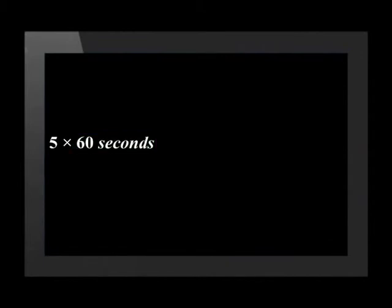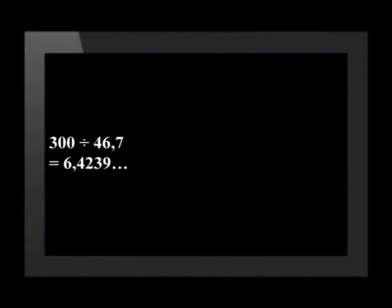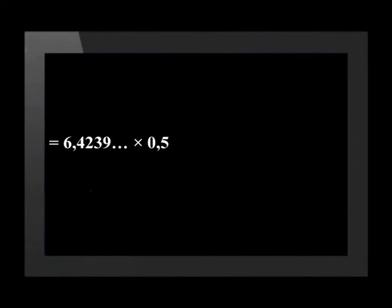We now need to calculate how much money Little will spend on the call. We first need to calculate the number of units he will be using and then multiply that by the cost of each unit. We start by converting minutes to seconds. There are 60 seconds in one minute, so 5 times 60 tells us that 5 minutes is equal to 300 seconds. Divide the number of seconds by the metering period in seconds to obtain the number of units of the call. 300 divided by 46.7 equals 6.4239. Now we multiply the number of units by the cost of each unit to find the total cost of the call. 6.4239 multiplied by 0.5 rand gives 3 rand and 21 cents, rounded to two decimal places.